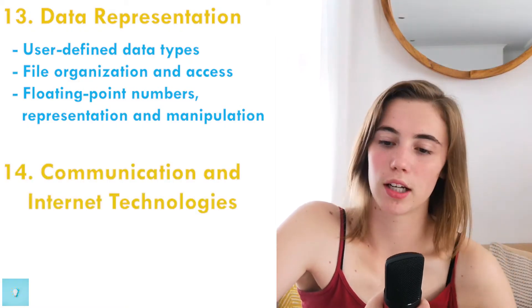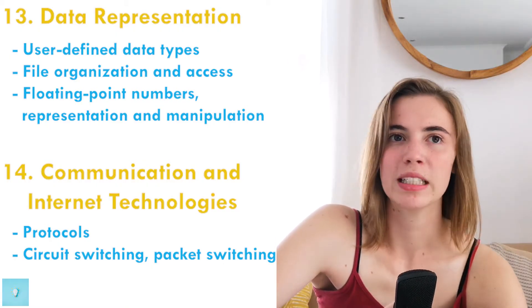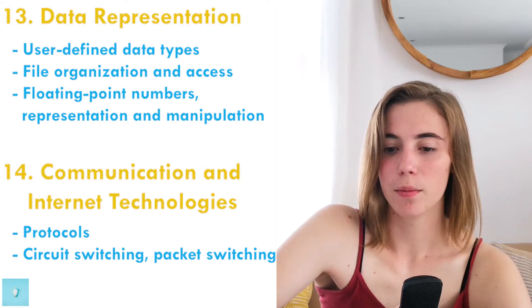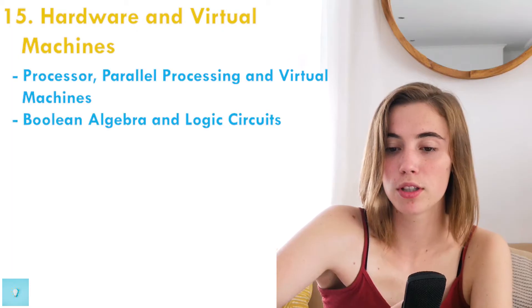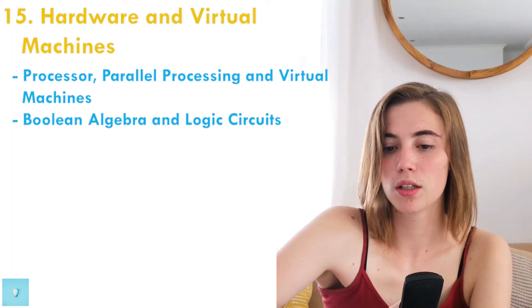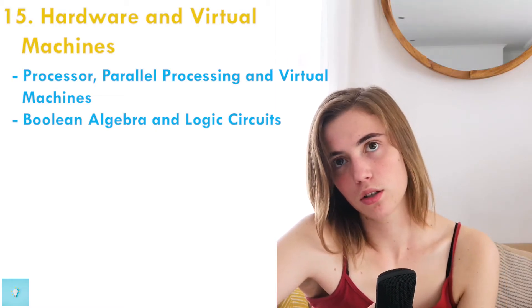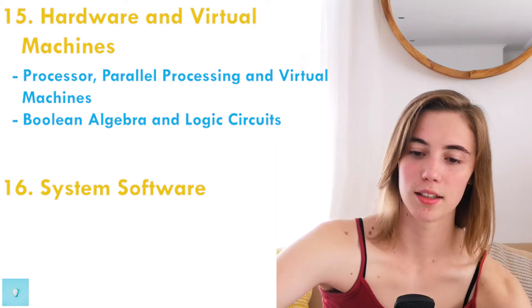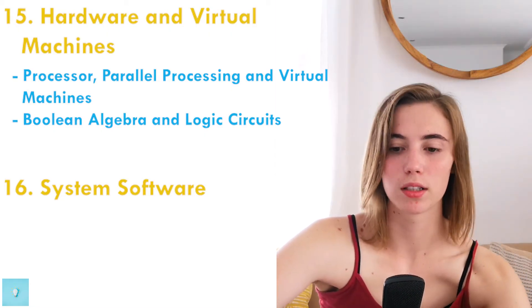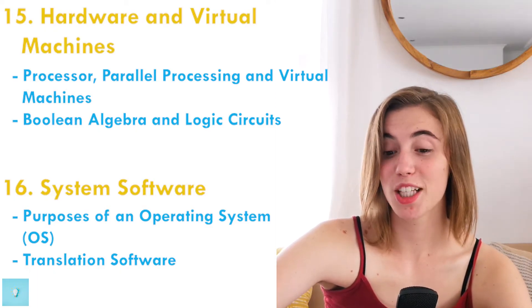Number 14 is communication and internet technologies — protocols like IP addressing and HTTPS, and circuit switching versus packet switching. Number 15 is hardware and virtual machines, covering parallel processing and virtual machines. Also under 15 is boolean algebra and logic circuits — similar to the logic gates from AS level but more advanced. Number 16 is system software: operating system purposes and translation software, again at a more advanced level than AS.